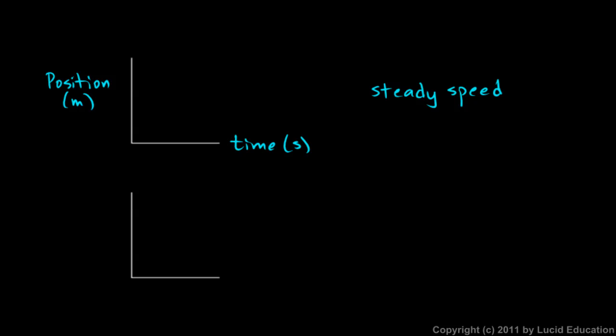Well if it's moving, its position is changing. And if it's at a steady speed, its position is changing by the same amount every second. And we end up with a straight graph.